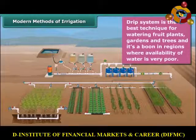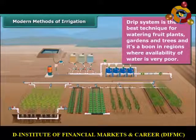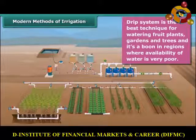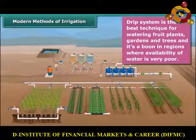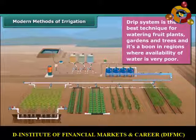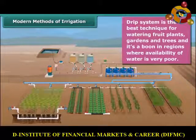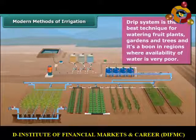Next is the drip system. In this system, the water falls drop by drop just at the position of the root. It is the best technique for watering fruit plants, gardens and trees. Water is not wasted at all, and hence it is a boon in regions where availability of water is very poor.